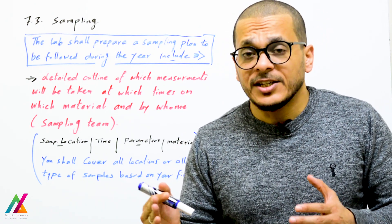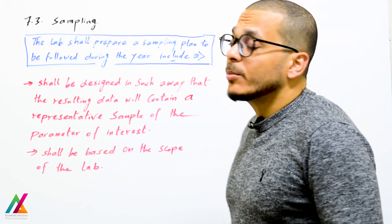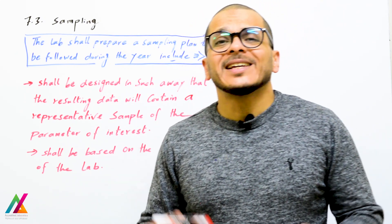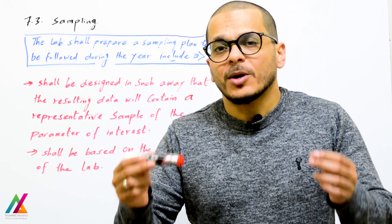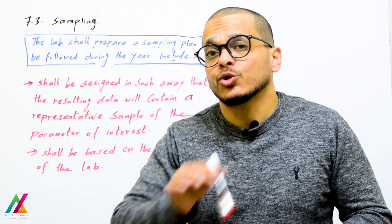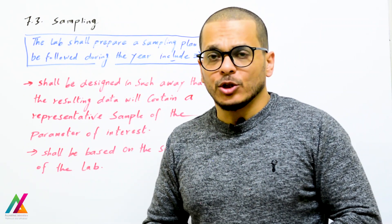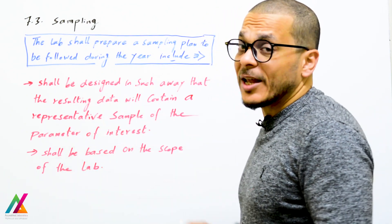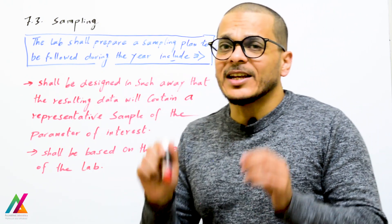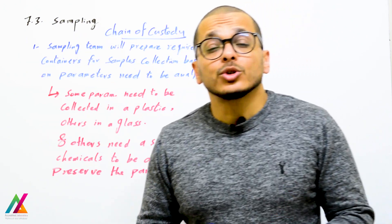The sampling plan can be changed from year to year based on lab requirements, and shall be based on the scope of the lab. A very important point: the sample should be representative of the parameter of interest, collected in such a way that it remains representative up to the point of sending it to the lab.